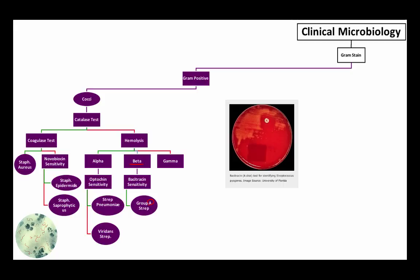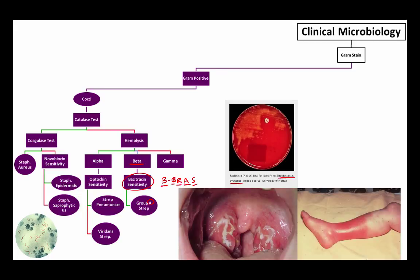The test to distinguish between them is called bacitracin sensitivity. We're using an antibiotic sensitivity test. This time it's bacitracin. I like to remember this as the acronym BBRAS. It really has no meaning, but I've remembered it for some reason. BBRAS being bacitracin, group B is resistant, group A is sensitive to it.